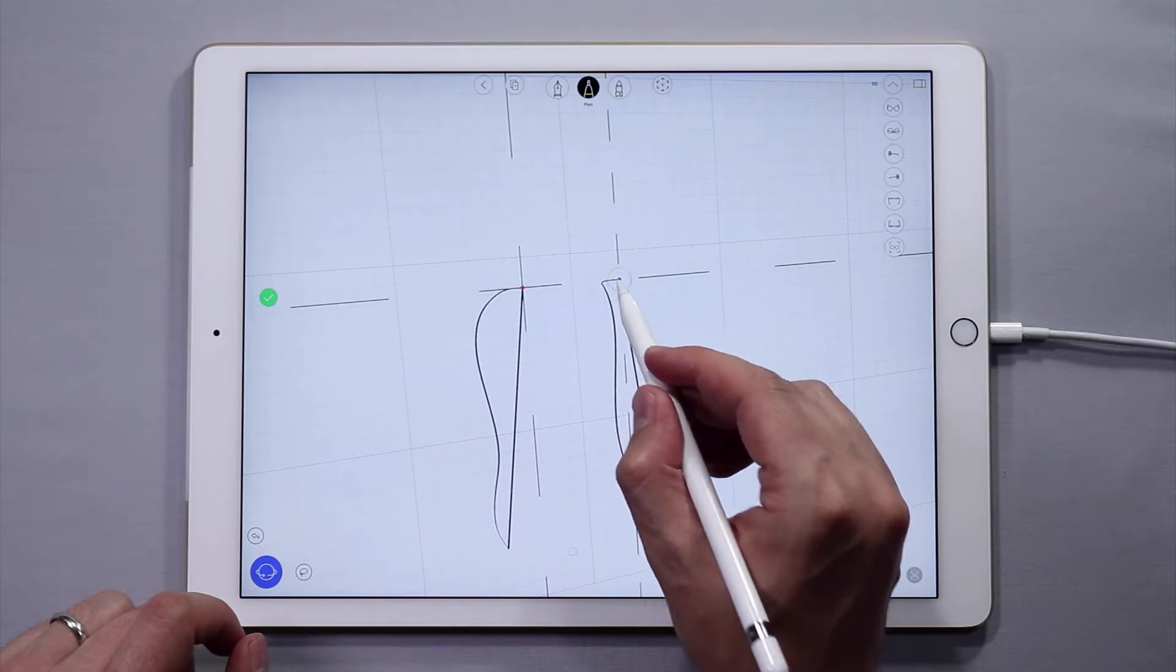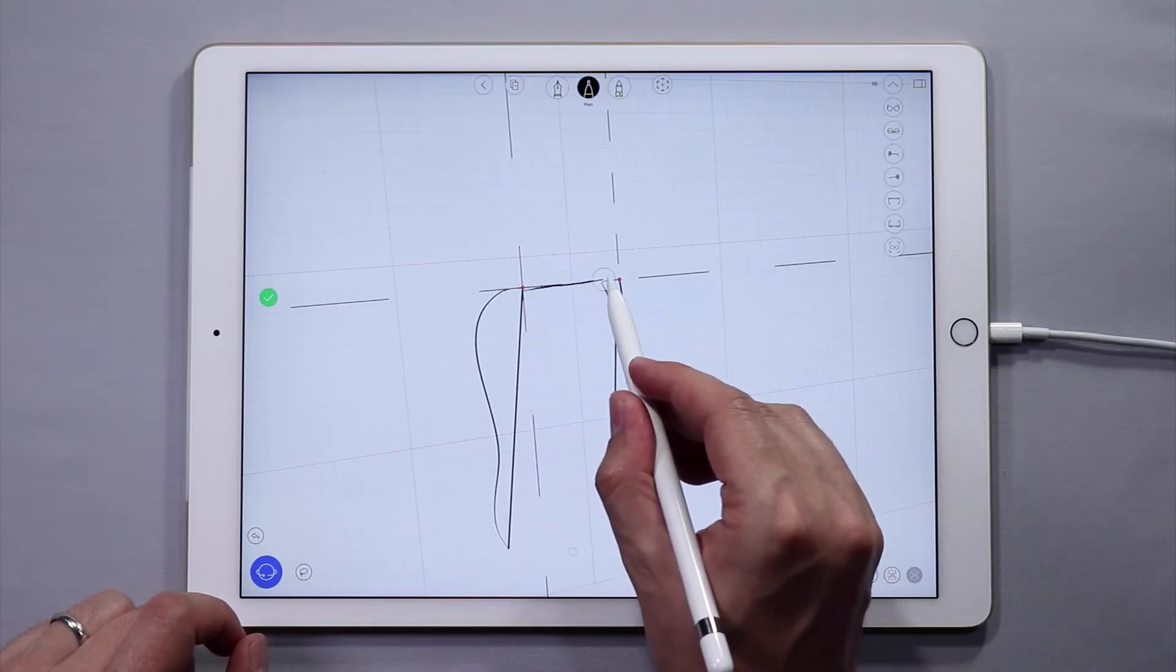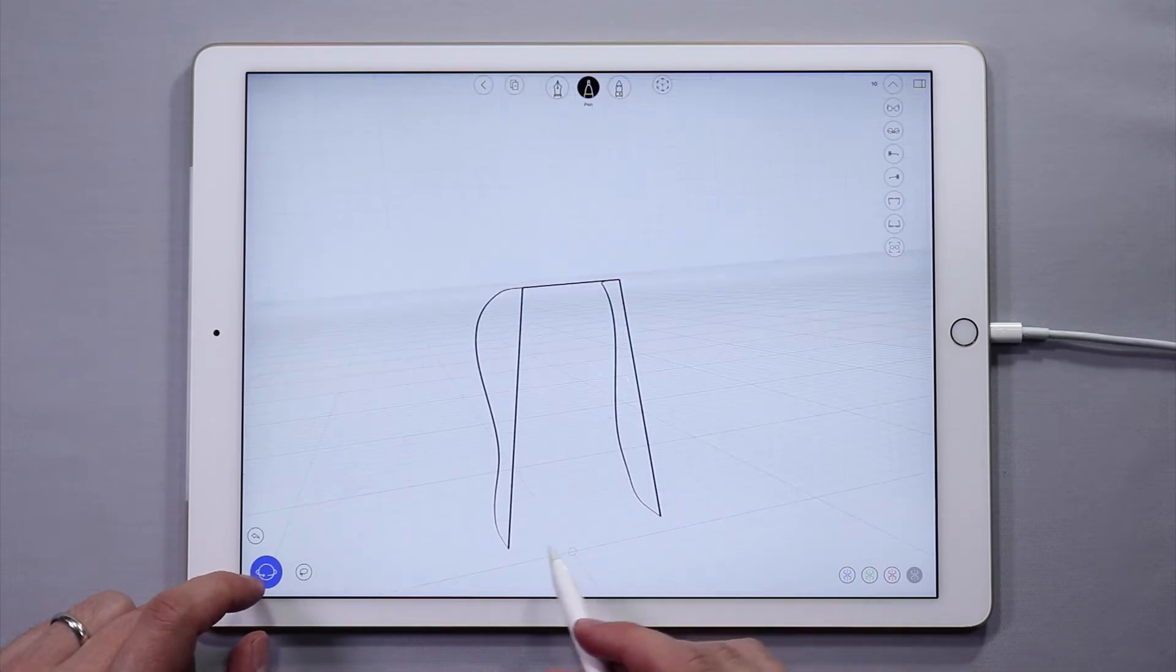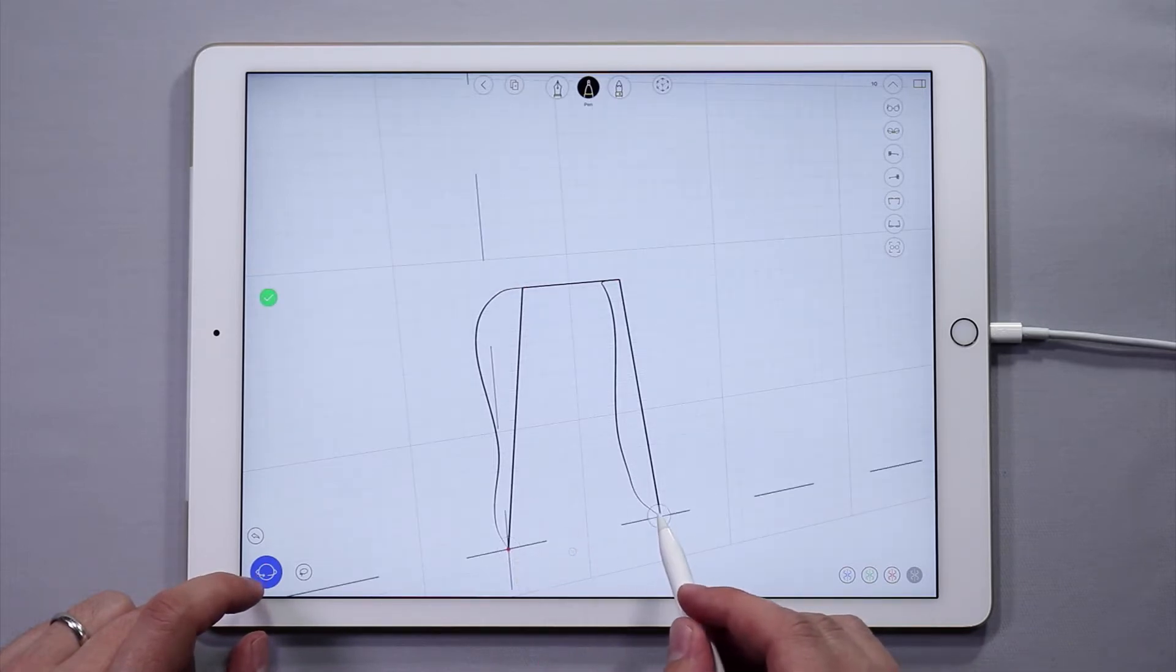Connect both sides with a line. And repeat this for the bottom of the bag. Tap and hold to create the sketch planes, and then drop a line.